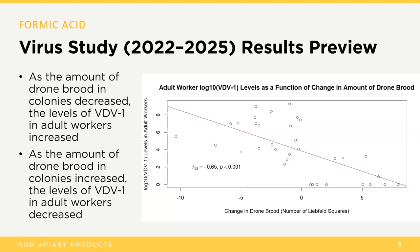That kind of supports what we were thinking. As drone brood decreases, the detectable level of virus in adult workers increases — and adult workers are the population we're concerned about because they're the ones that keep the hive going. Conversely, as the amount of drone brood increased in the colonies, the levels of VDV-1 in adult workers decreased. Our preliminary data suggests that drones are acting as some kind of a buffer against the spread of virus to the rest of the population.